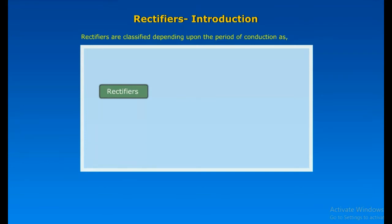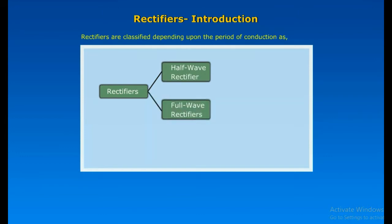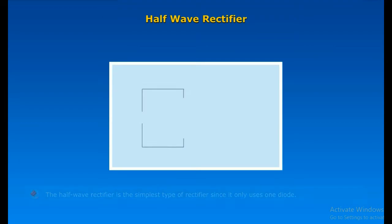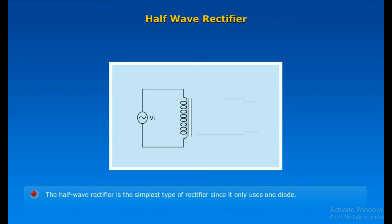Rectifiers are classified depending upon the period of conduction as Half-Wave Rectifiers and Full-Wave Rectifiers. Full-Wave Rectifiers are again classified into Full-Wave Bridge Rectifier and Center-Tapped Full-Wave Rectifier. The Half-Wave Rectifier is the simplest type of rectifier since it only uses one diode.